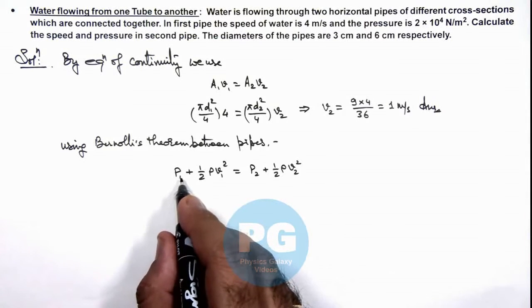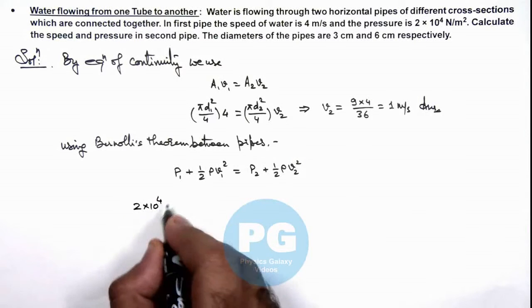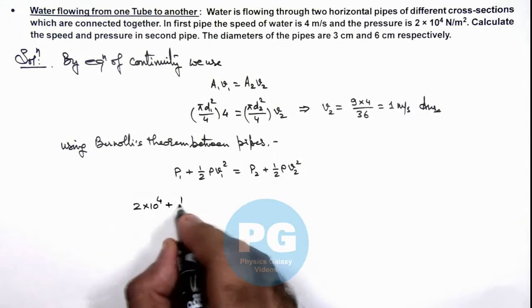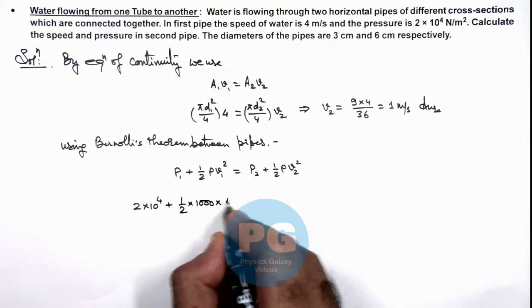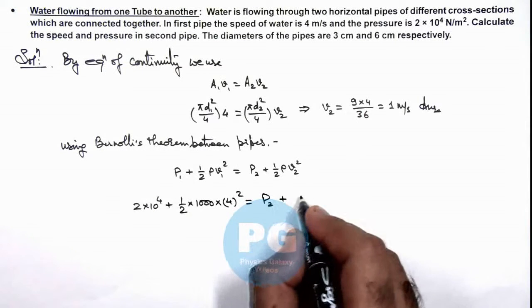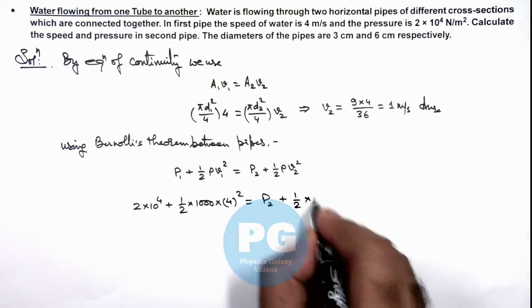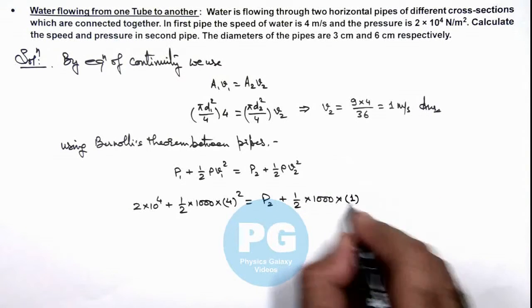So we can substitute the value of pressure in the first pipe as 2×10⁴ plus half the density of water, we can write as 1000 multiplied by 4 squared, is equal to P₂ plus half multiplied by 1000 multiplied by v₂, we have calculated as 1, so 1 squared.